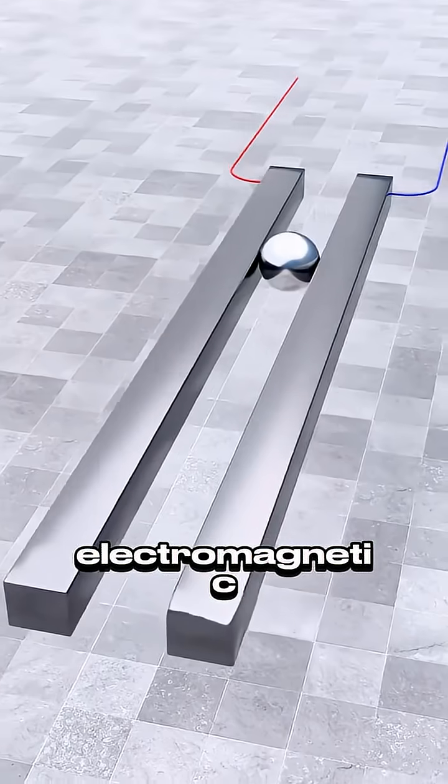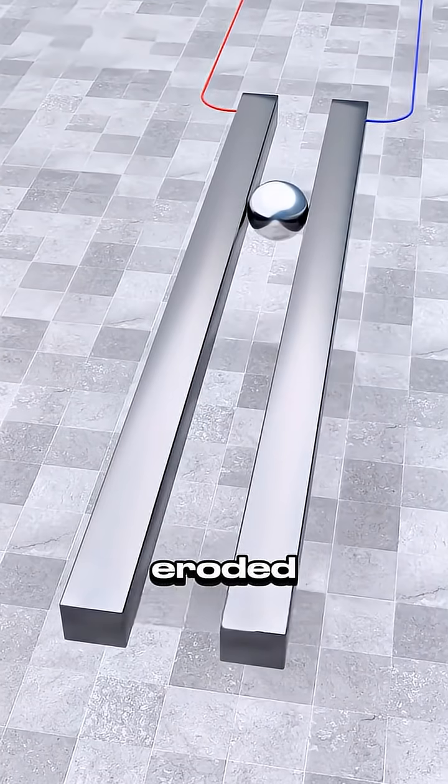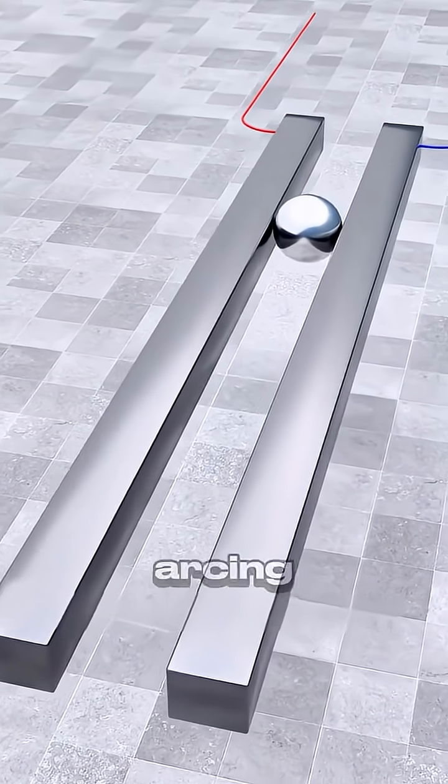That's a railgun, an electromagnetic slingshot, but the rails erode quickly from the extreme heat and arcing.